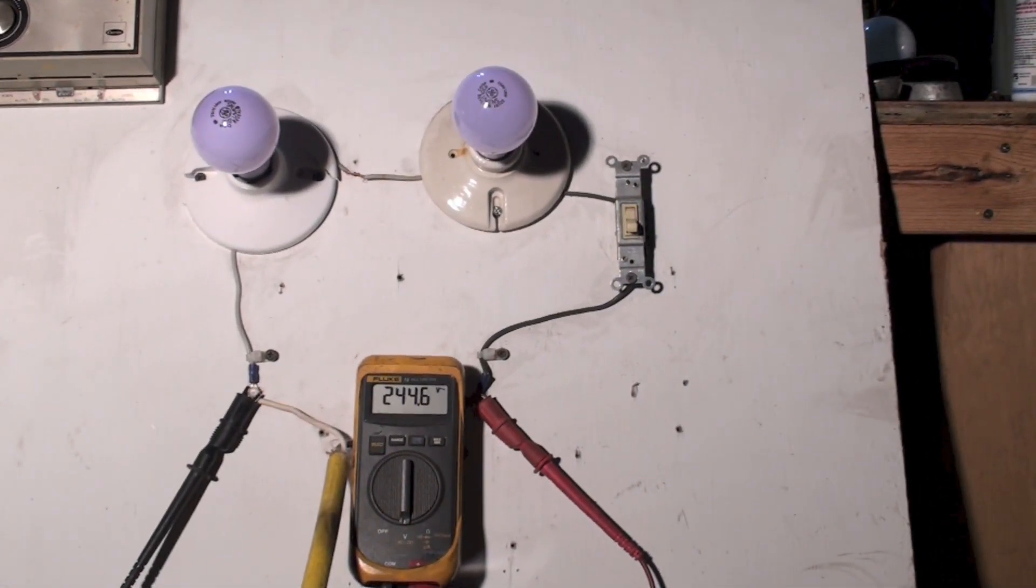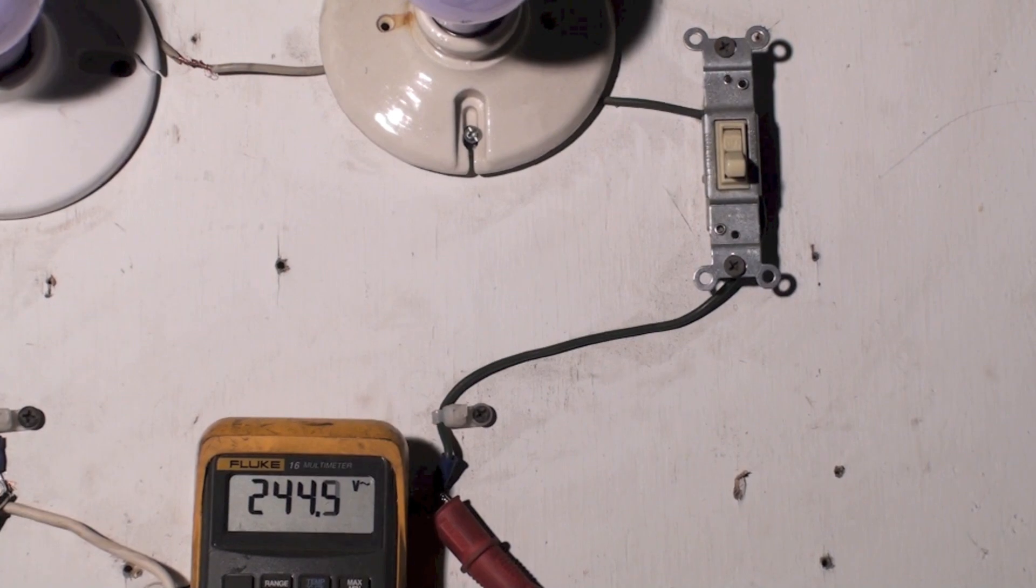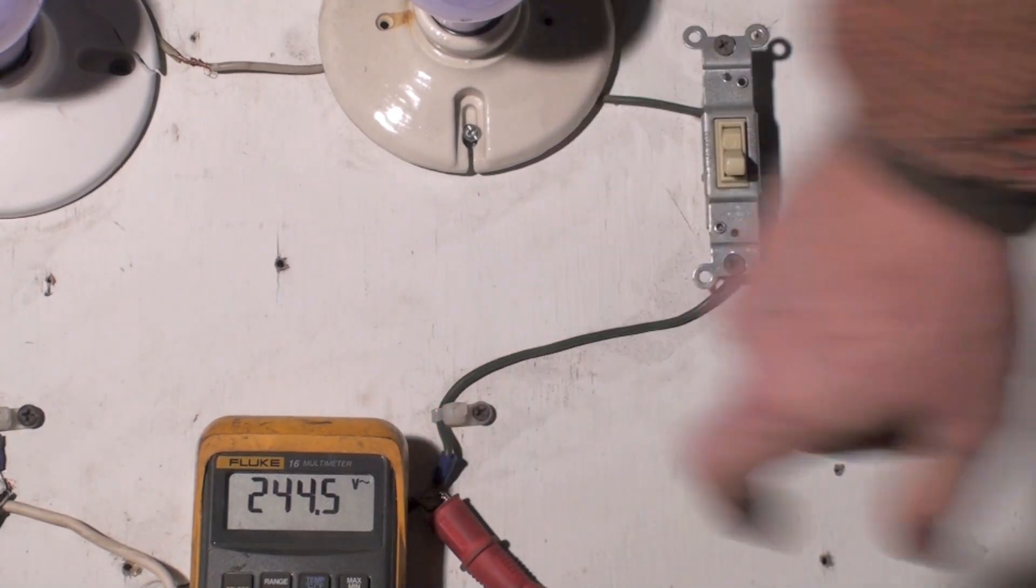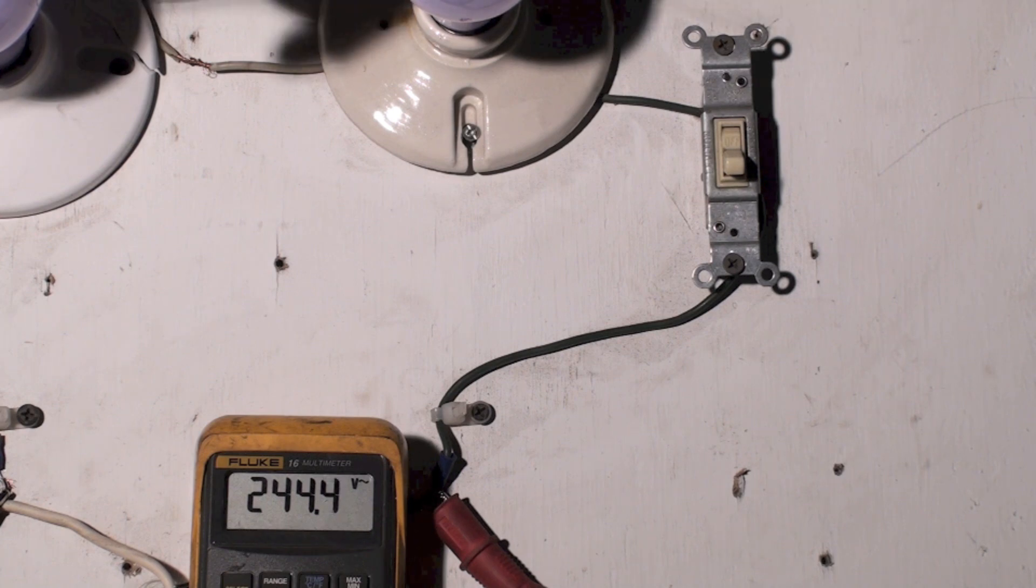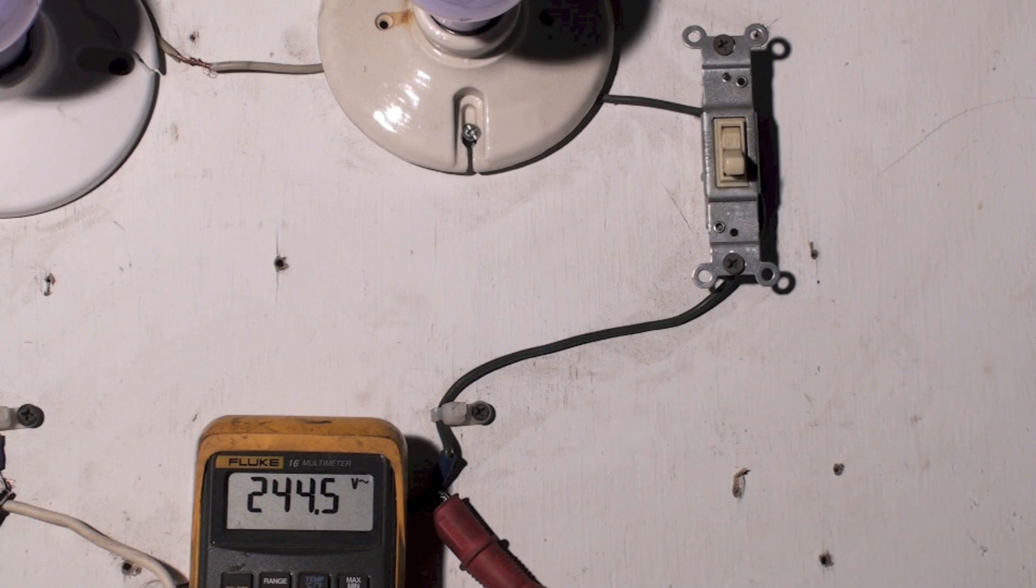Okay, this is a demonstration of two loads in series. What I want you to note right off is we're looking at 244 volts. These are 120 volt light bulbs, each one of them 75 watts.